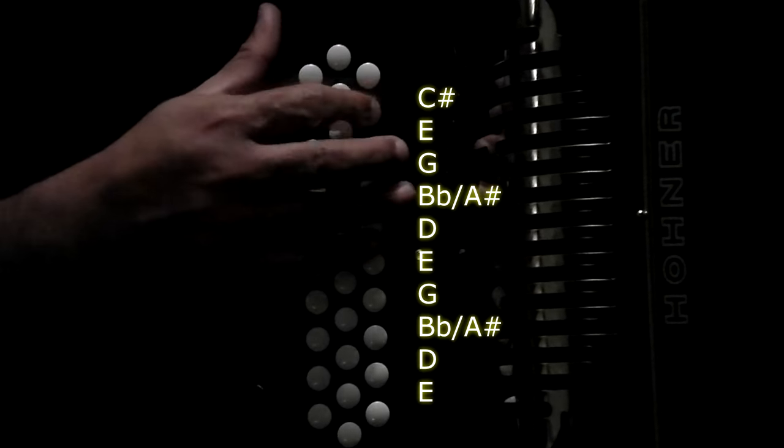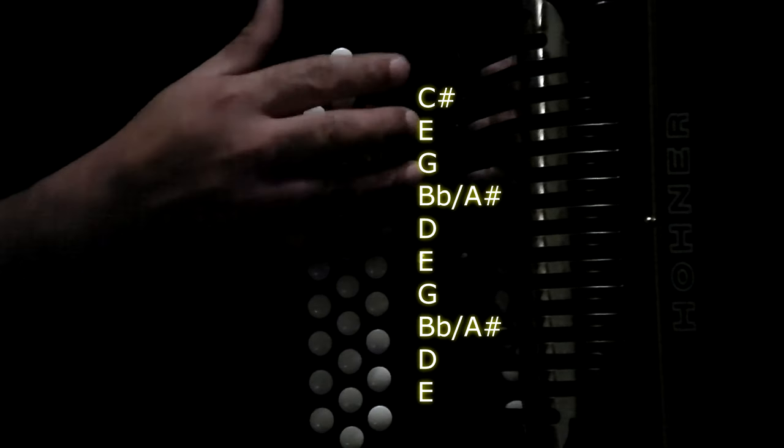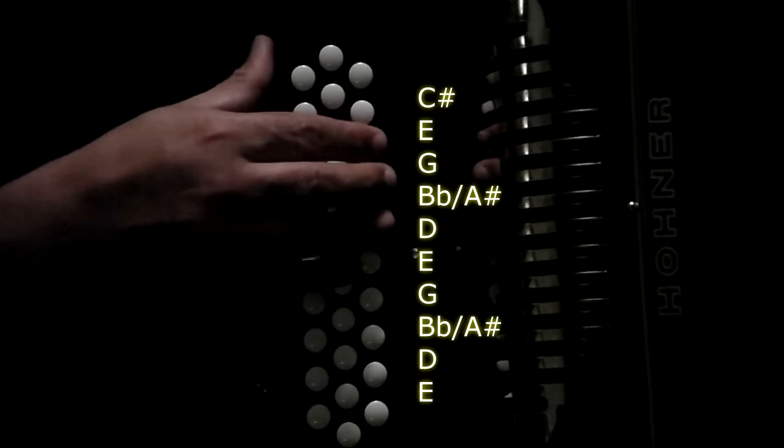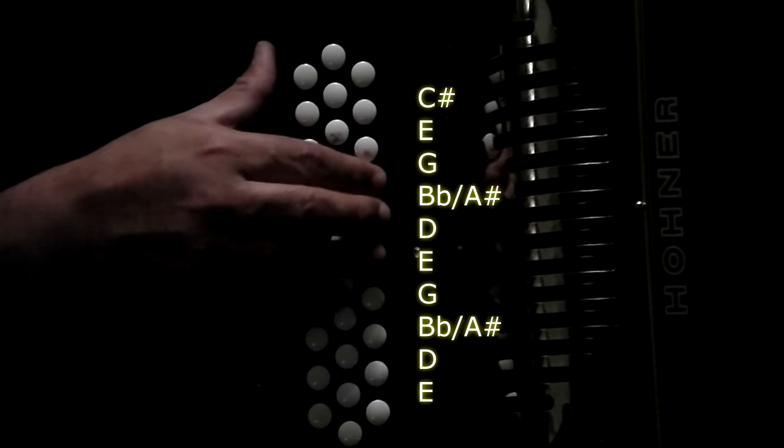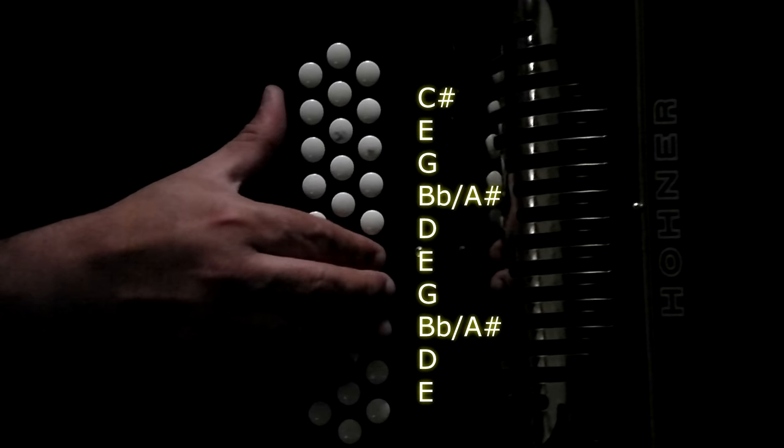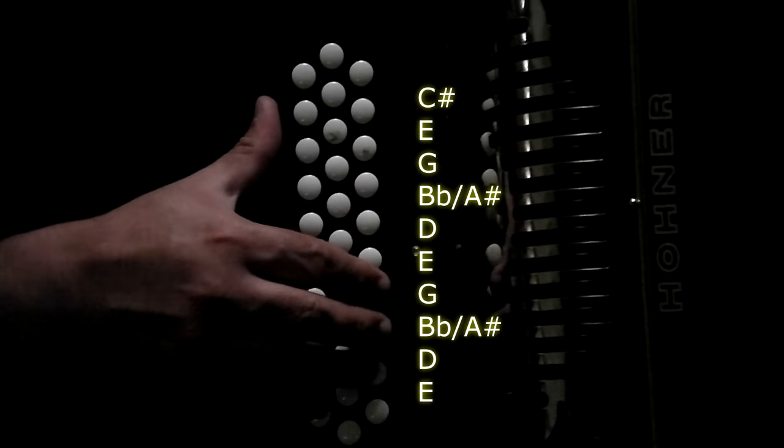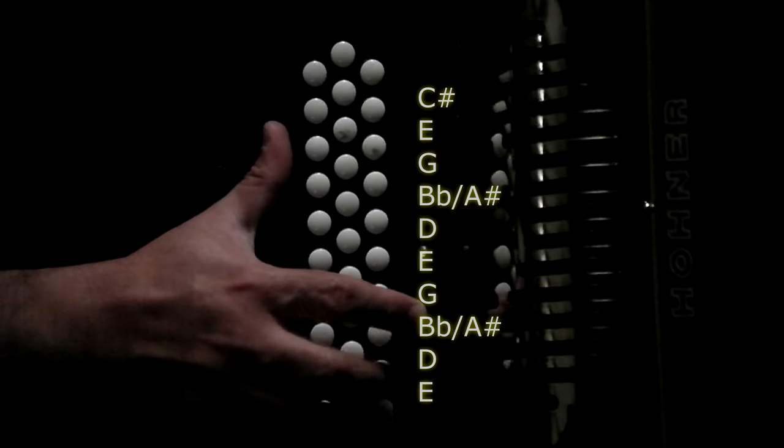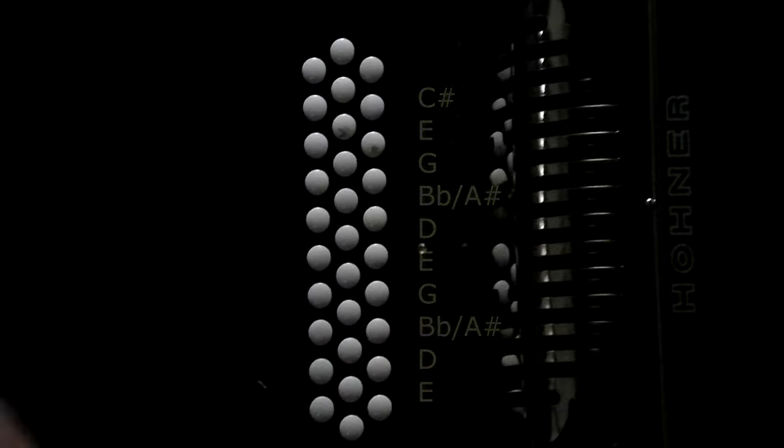So one more time. C sharp, G—sorry. C sharp, E, G, B flat or A sharp, D, E, G, B flat or A sharp, D, and E.